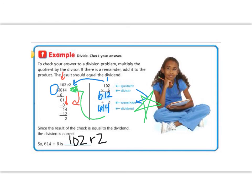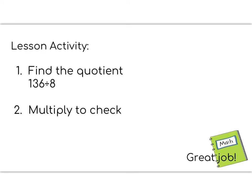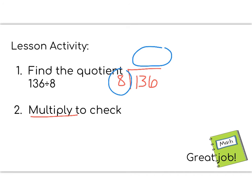Great job! It's time for your lesson activity. Today's lesson activity has two parts. The first part is you're going to find the quotient — that means divide — 136 divided by 8. Then you're going to multiply to check. Remember, we multiply the quotient times 8 in order to get back to our original number of 136. This work needs to be done in your math notebook and ready to show your teacher when you're done.